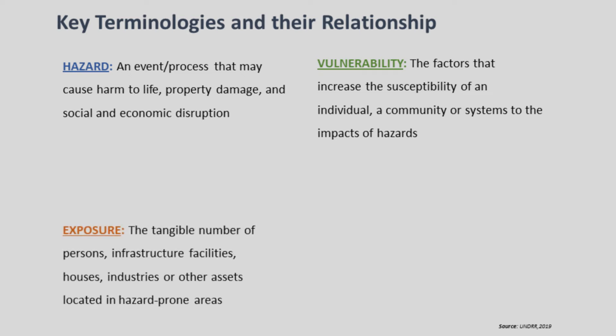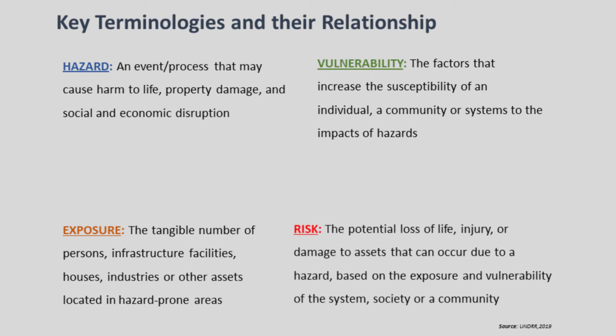Exposure indicates the tangible number of persons, infrastructure facilities, houses, industries or other assets that are located in hazard-prone areas. Risk is the potential loss of life, injury or damage to assets that can occur due to a hazard, based on the exposure and vulnerability of the system, society or community.